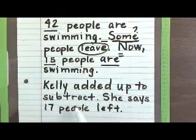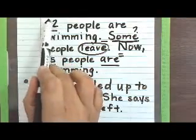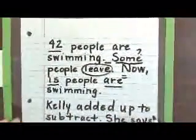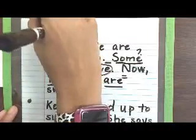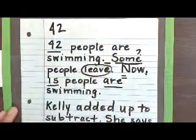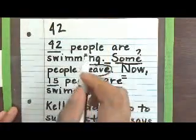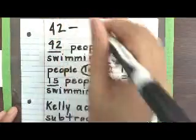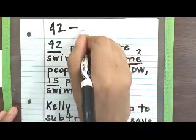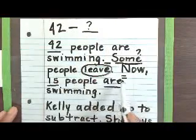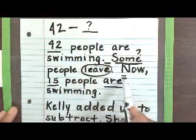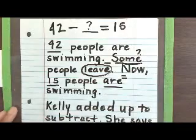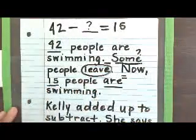Below it says Kelly added up to subtract and she says 17 people left. Because we did our underlining and circling, we have our math problem written out for us: we have 42, leave which tells us subtraction, some which is our question mark, and 'are' which equals 15. So essentially we created our equation: 42 minus blank is going to equal 15. Kelly's strategy was adding up to subtract, and she says 17 people left, so we're going to see if Kelly is correct.